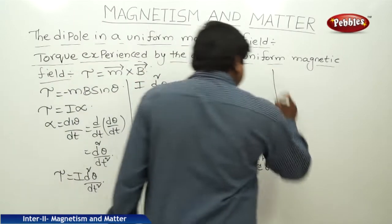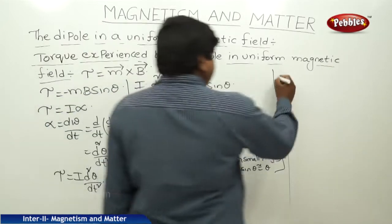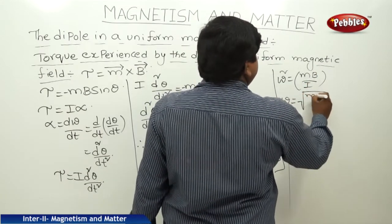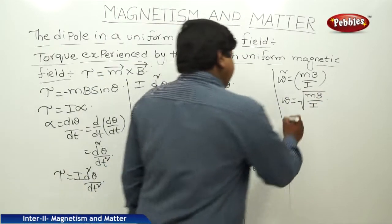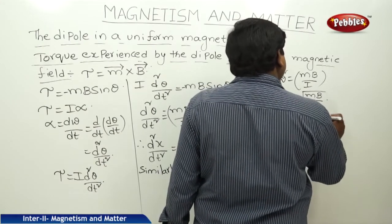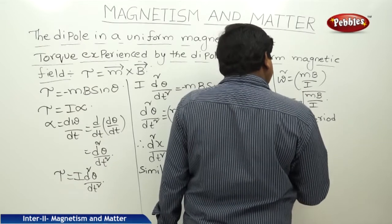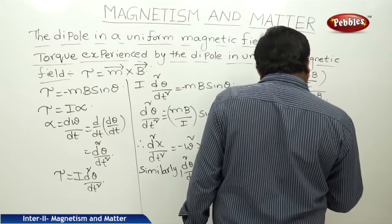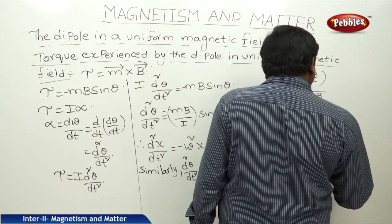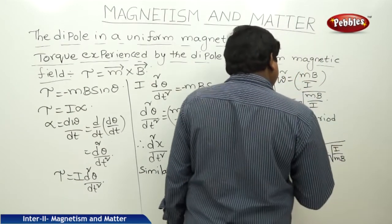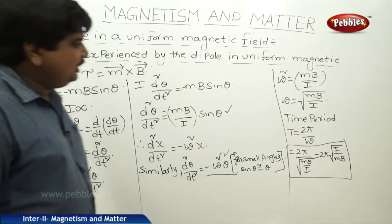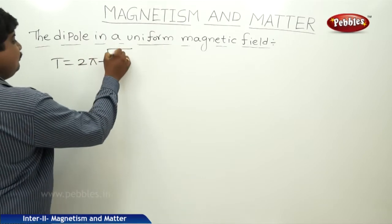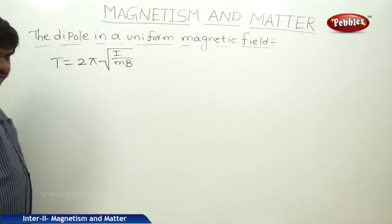If you compare this equation with the standard SHM equation d squared x by dt squared equals minus omega squared x, omega squared is equal to MB by I, so omega is equal to square root of MB by I. The time period T is equal to 2 pi by omega, which gives T equal to 2 pi into square root of I by MB.